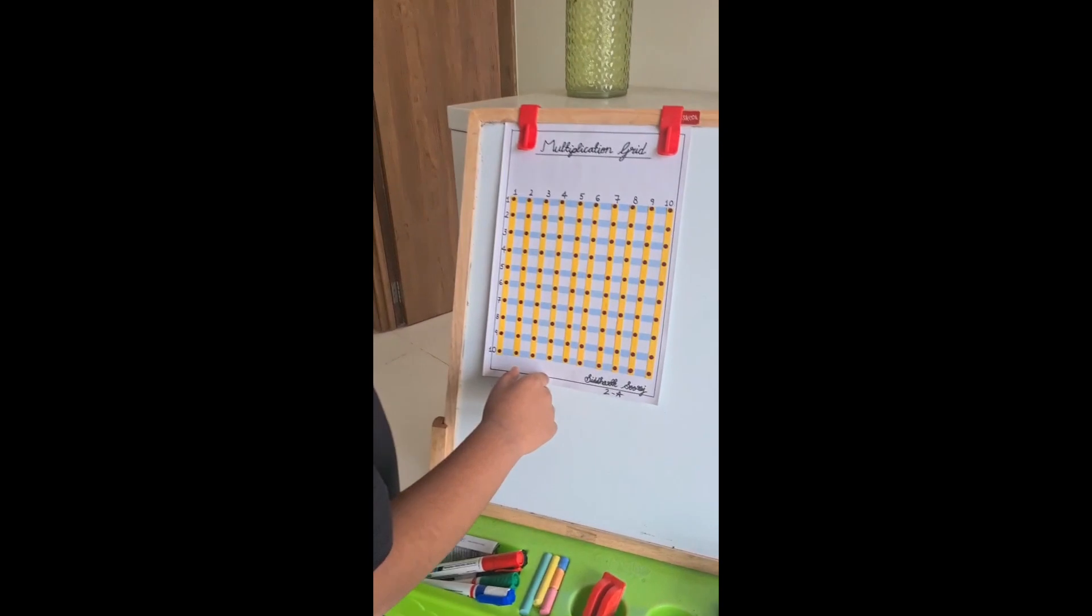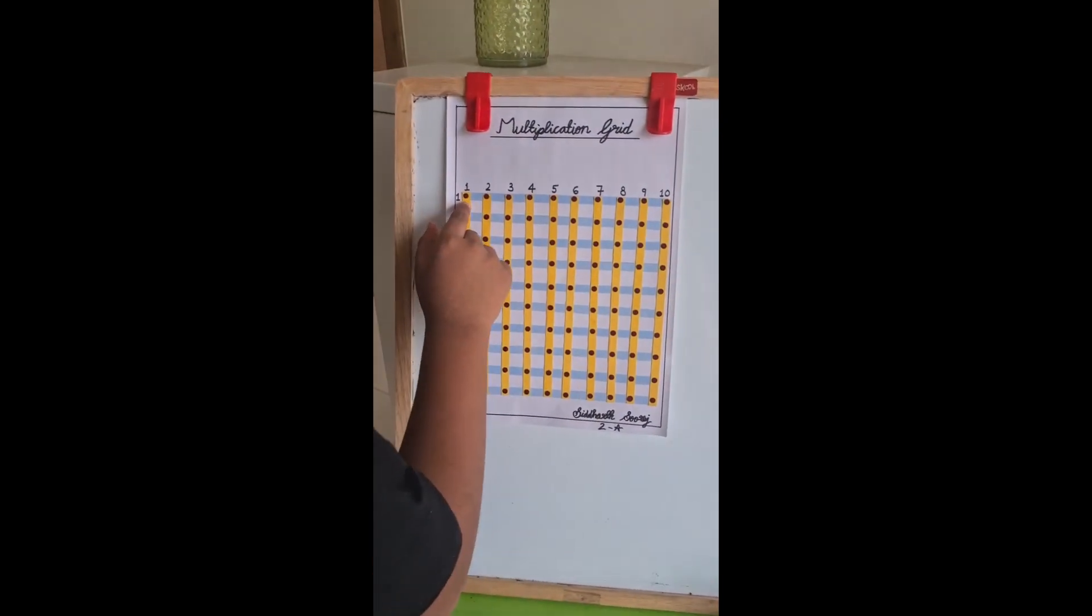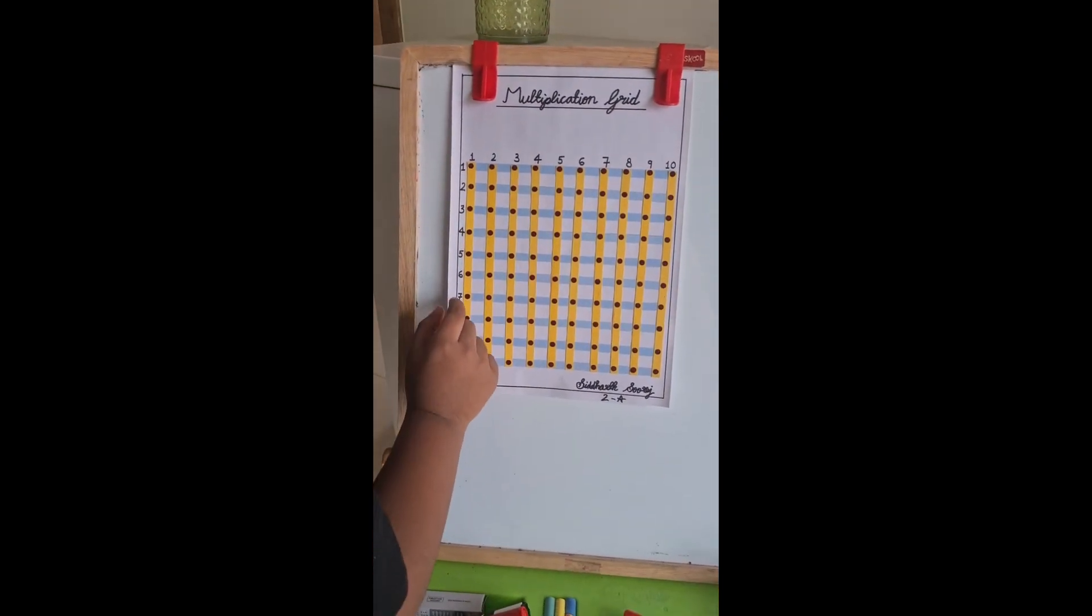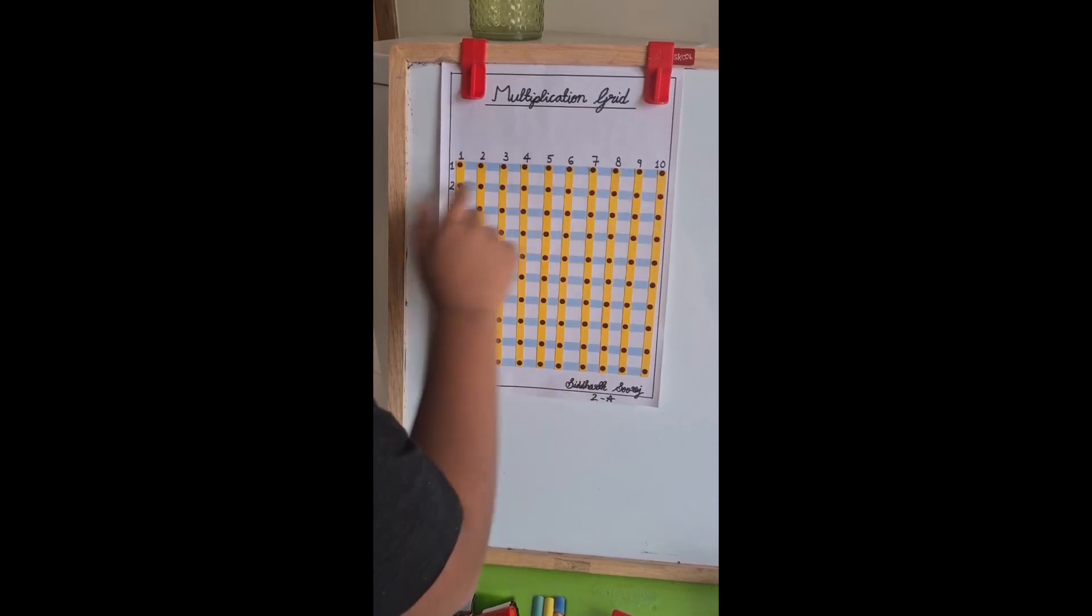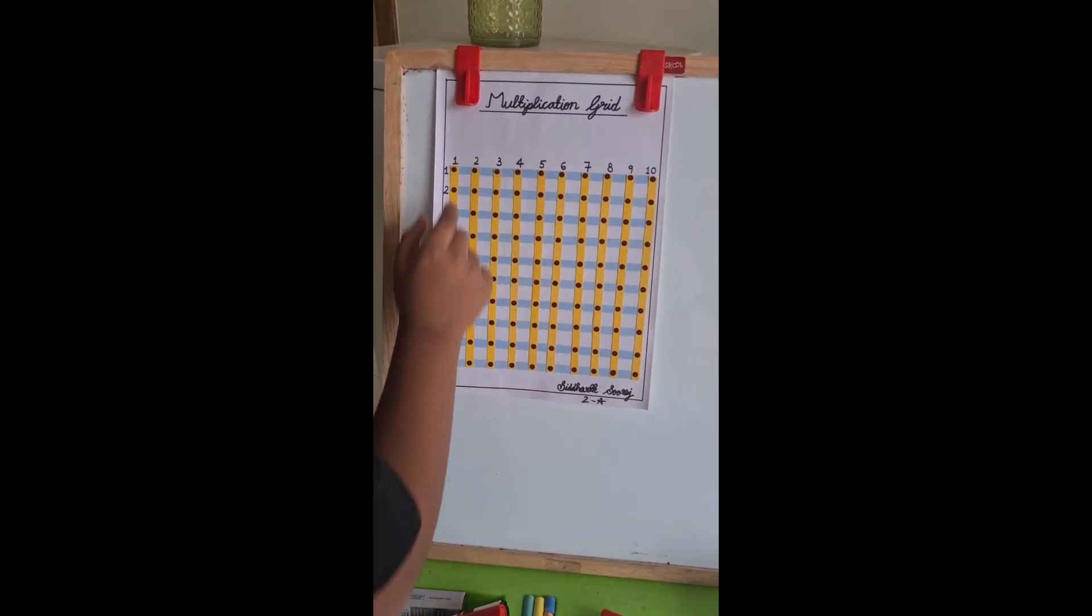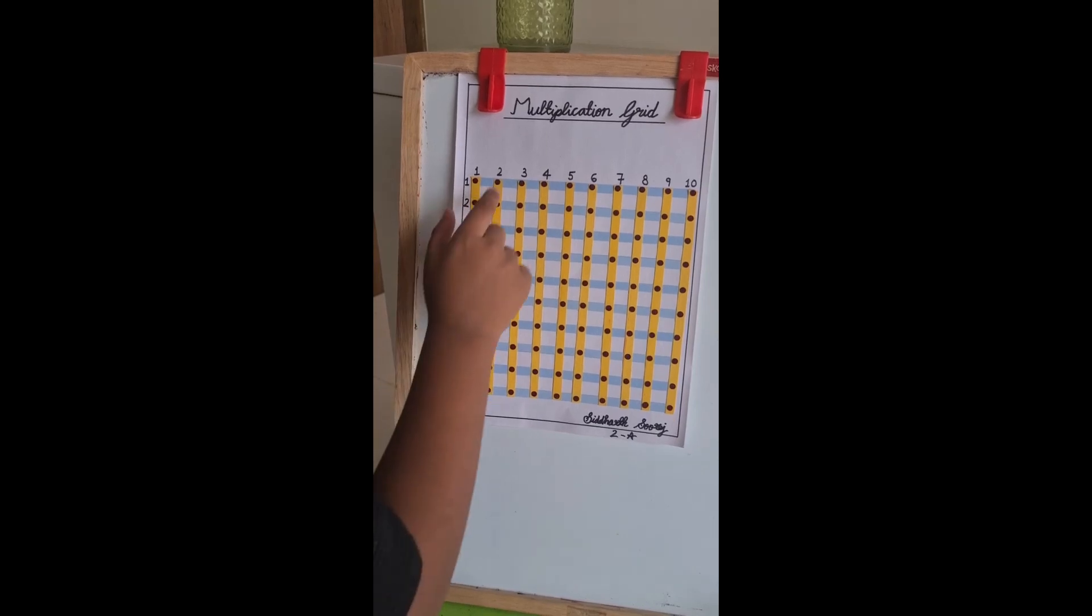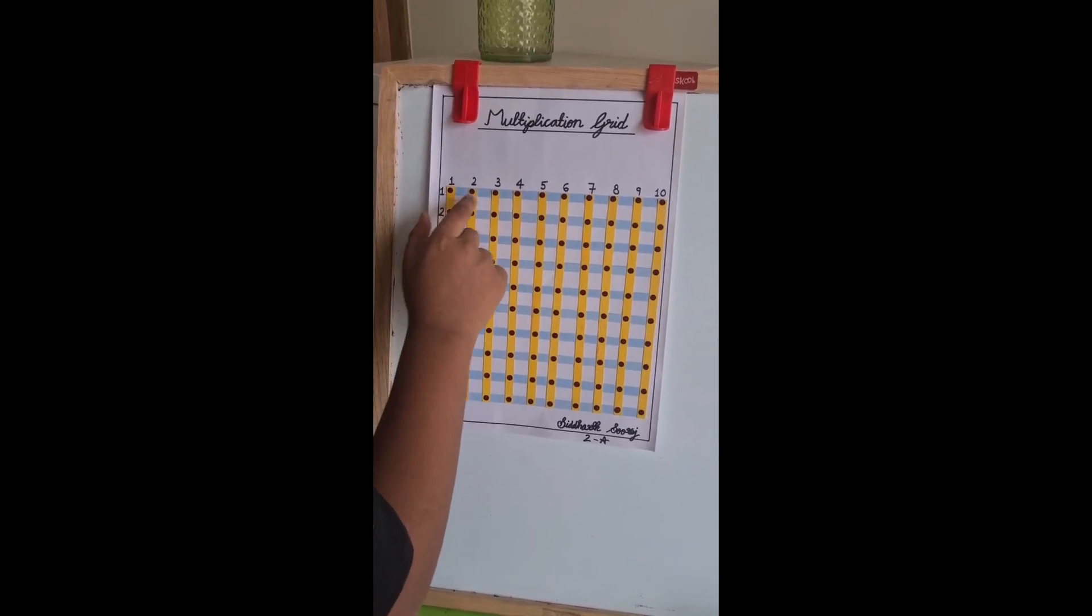This is my multiplication grid. Here I have pasted yellow vertical strips and blue horizontal strips. And at the meeting point of each strips, I have pasted bindis.